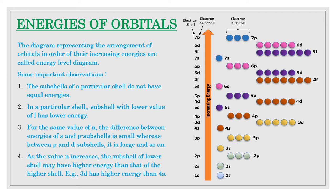Energies of orbitals using energy level diagrams of hydrogen atom as well as multi-electron atoms. We had already discussed that different subshells of the same main shell — K, L, M, N — have different energies, and this is true only in case of multi-electron atoms, meaning those having more than one electron. In case of hydrogen or hydrogen-like particles containing only one electron, all subshells have the same energy, but in multi-electron atoms the different subshells of the same main shell have different energies.